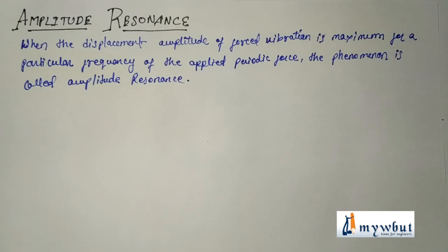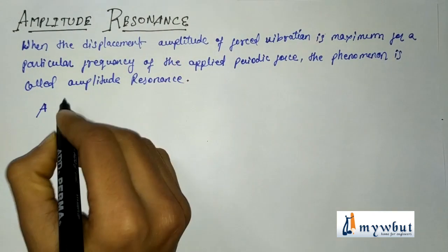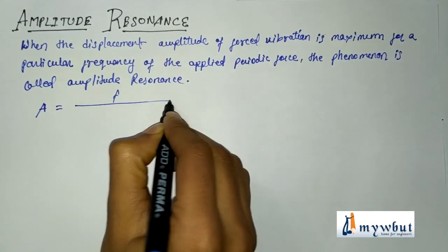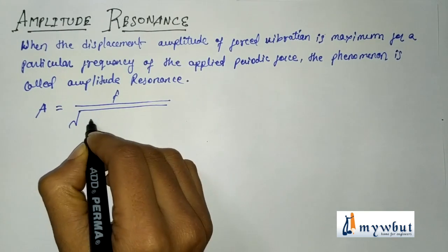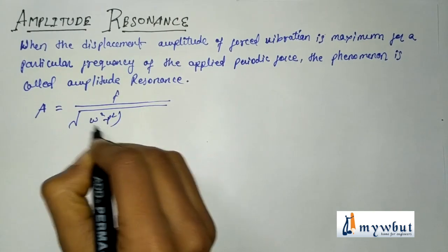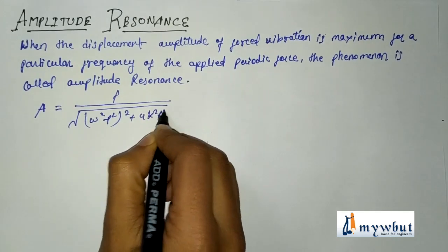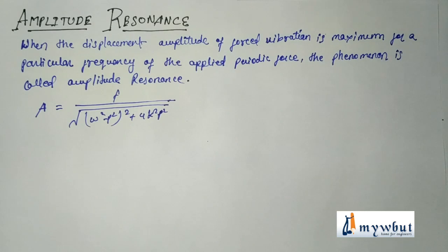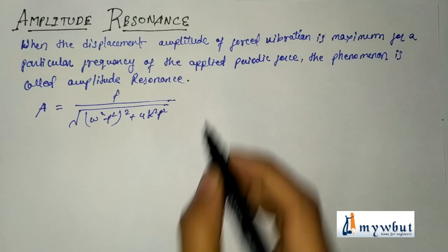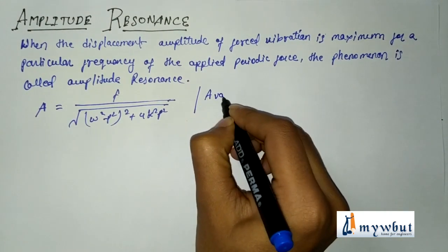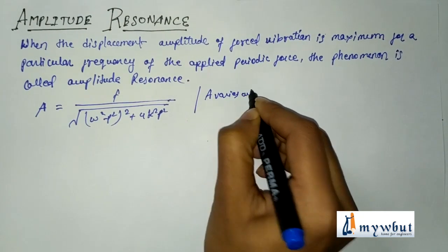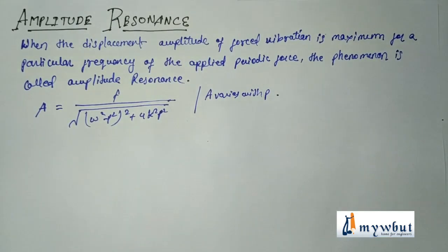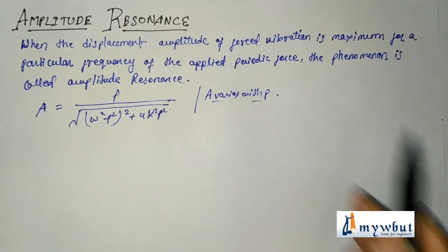Now let us see the equations and derivations for amplitude resonance. As we know from previous derivations, amplitude A equals f divided by the square root of (omega squared minus p squared) squared plus 4k squared p squared. So amplitude A varies with the frequency p of the applied force, and A is maximum for a particular value of p.